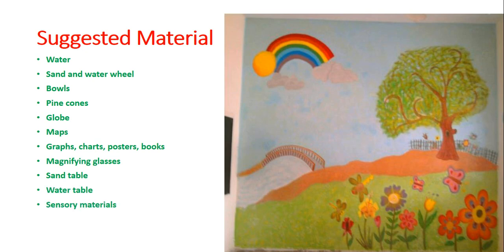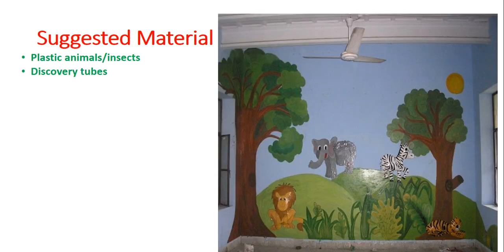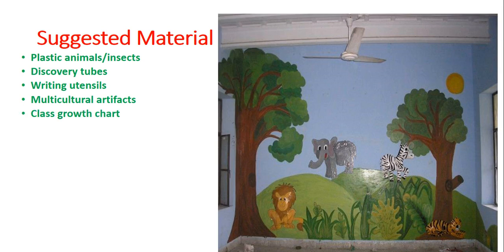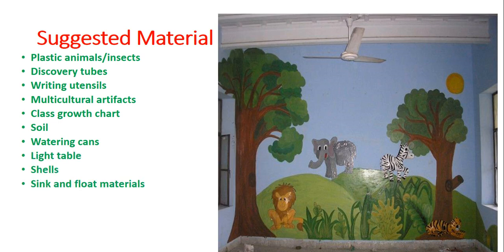Additional materials: sensory materials, tub for storage, rulers, yard sticks, plastic animals, insects, discovery tubes, writing utensils, multi-cultural artifacts, grass growth chart, soil, watering cans, light tables, shelves, sink-or-float materials, safety goggles, and flashlights.